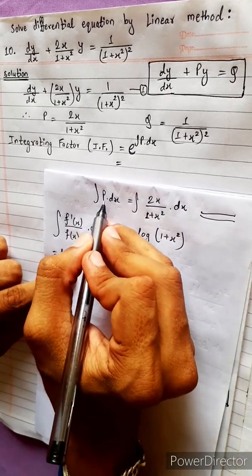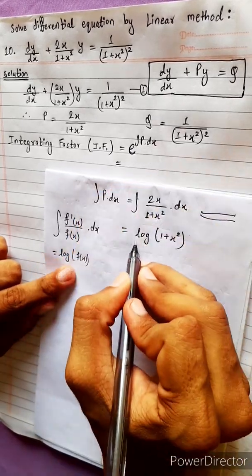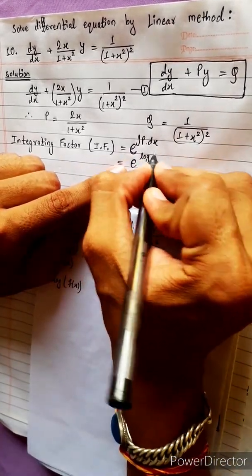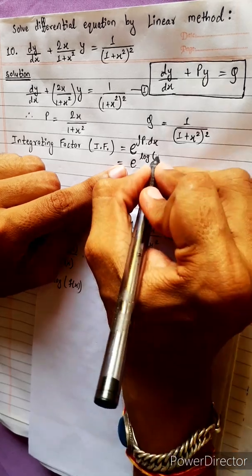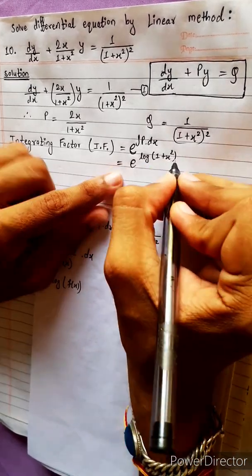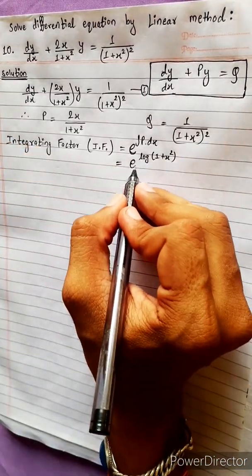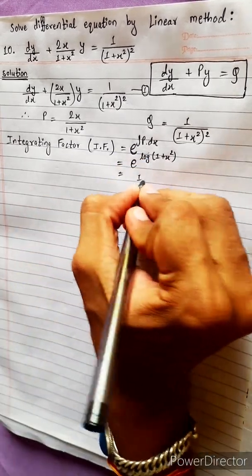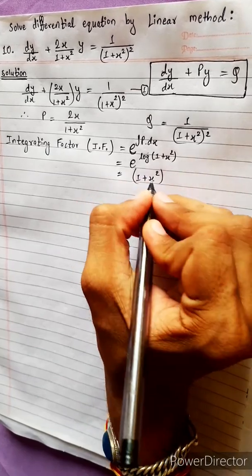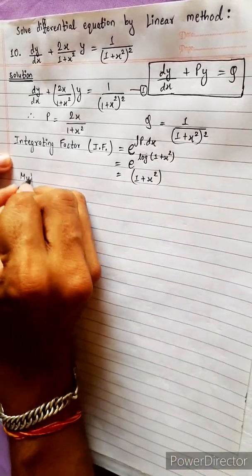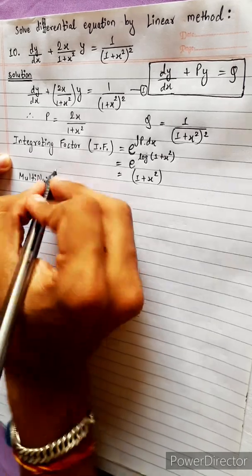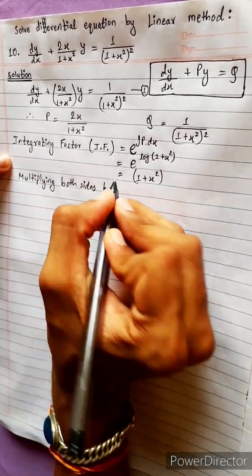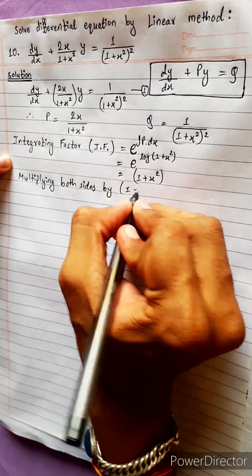So the integrating factor is e to the power of log(1 + x²). The exponential and log cancel, giving integrating factor equals (1 + x²). Now we multiply both sides of the equation by this integrating factor (1 + x²).